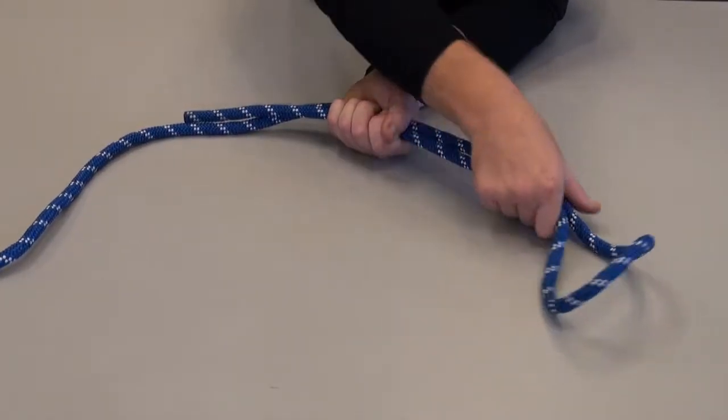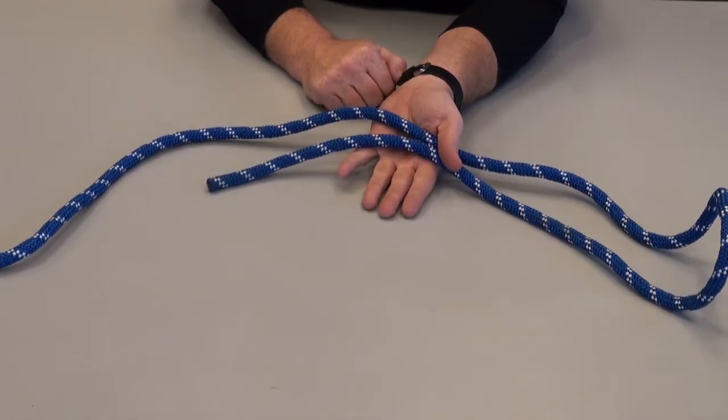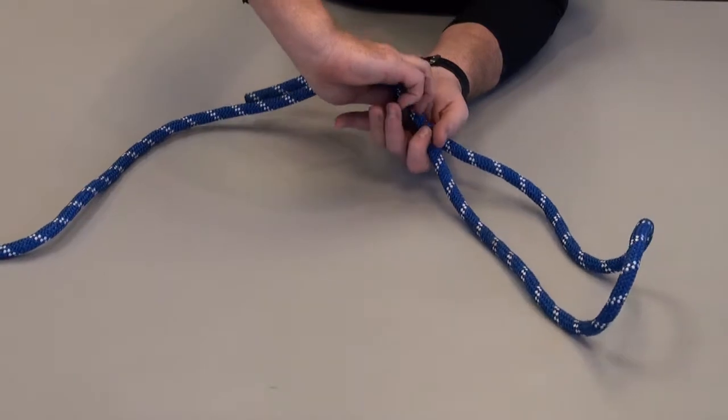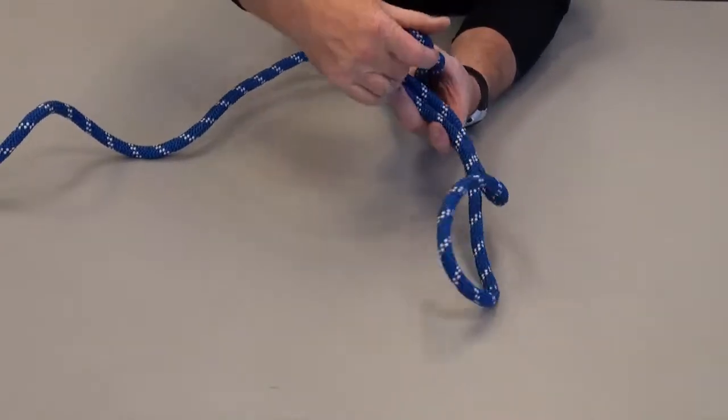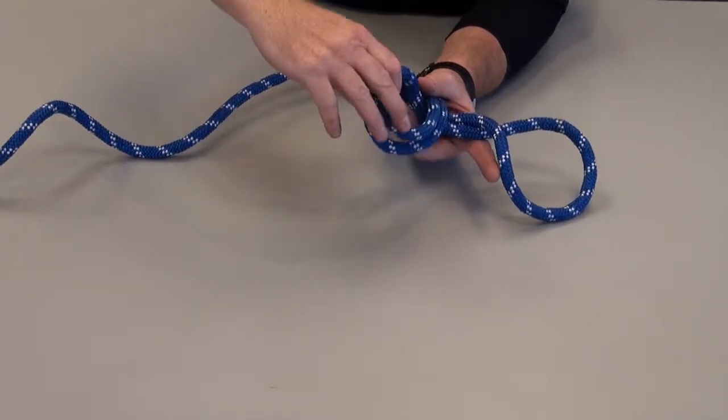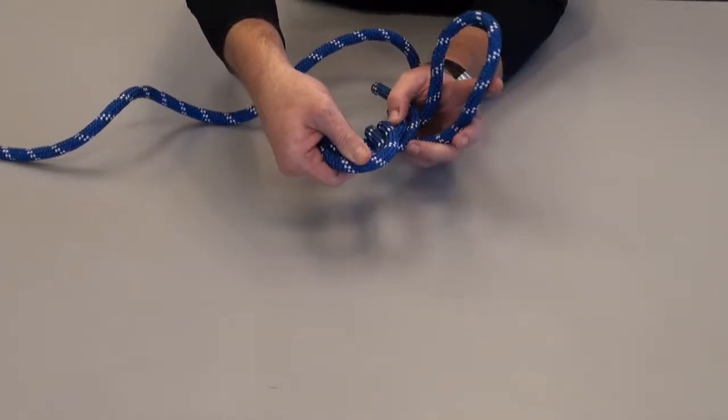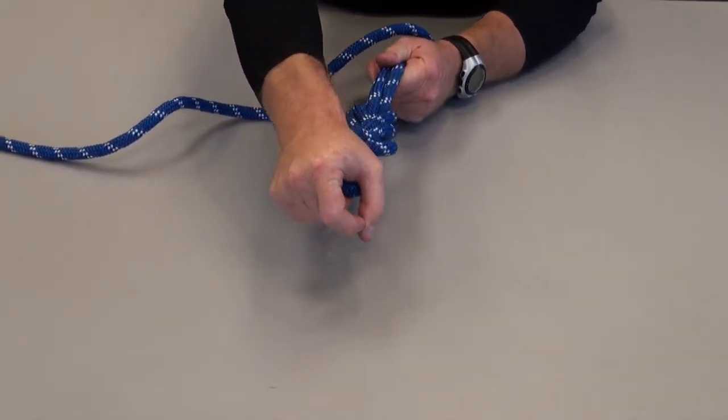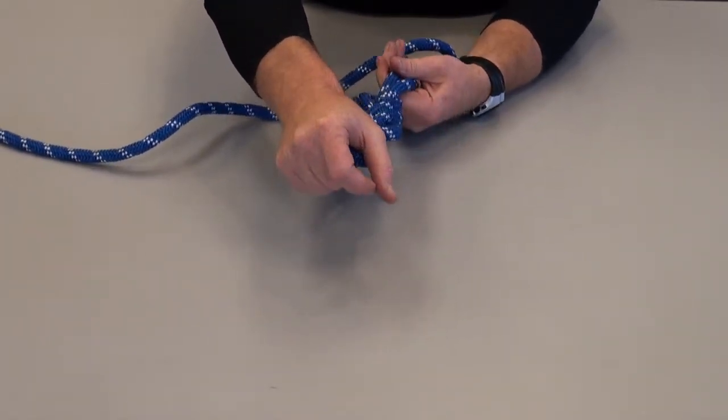We're going to ensure that we've extended an adequate length to tie our figure eight on a bight. Then we're going to start with our position one and do our twist, hold that joint, then reset and twist that first segment again. Now simply push that bight of rope up through the opening just like we would on a simple eight.